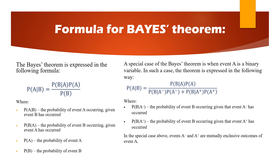The formula for Bayes theorem is expressed as: P(A|B) = P(B|A) × P(A) / P(B). Here, P(A|B) is the probability of event A occurring given event B has occurred. P(B|A) is the probability of event B occurring given event A has occurred. P(A) is the probability of event A, and P(B) is the probability of event B.